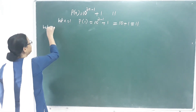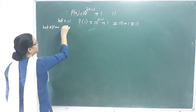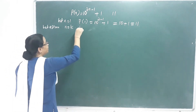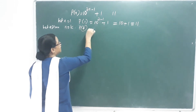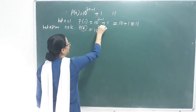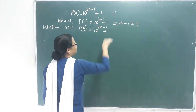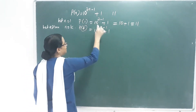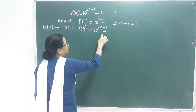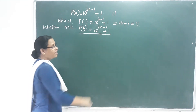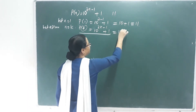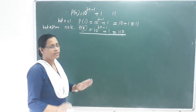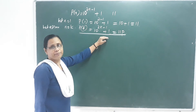Let us assume that n equal to k. Then P of k is equal to 10 raised to 2k minus 1 plus 1. This is our leading step, equal to 11p. Underline this step — this is our main step.